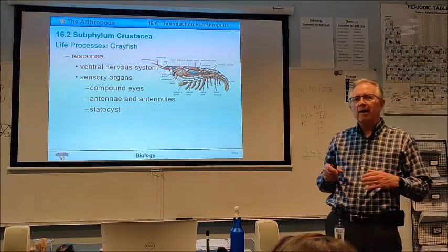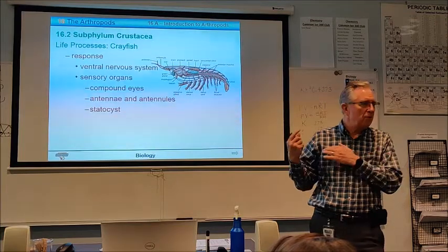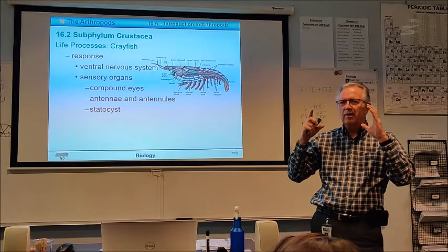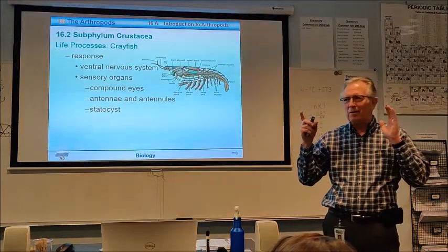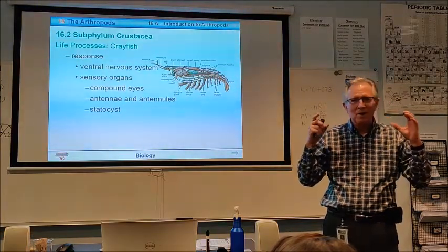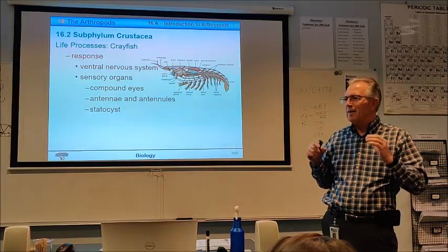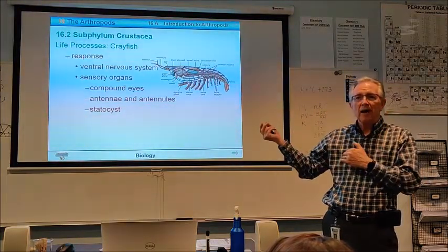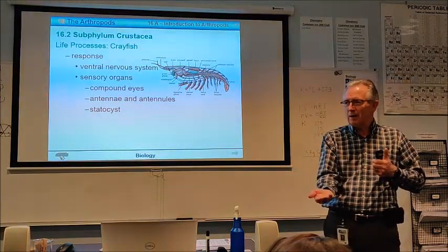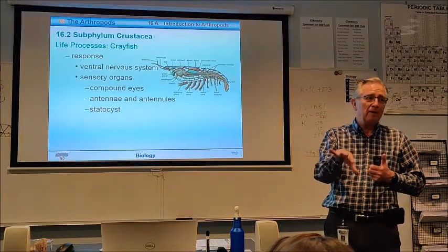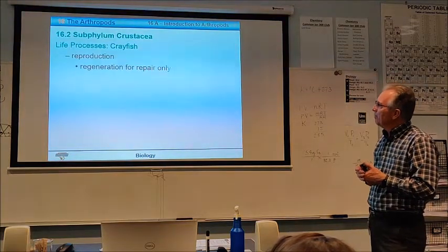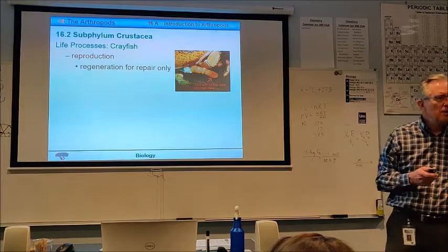They also have something called statocysts. Now, statocysts are, to them, kind of like you have in your inner ear the ability to tell if you are standing up or you're tipping over, if you're laying on your back or if you're upside down. You have something that tells you which direction my body is facing in our inner ear. Well, this does that for them. So, if you take a crayfish and put him in the water upside down, he knows that he's upside down, and he will work to get himself tipped over again.